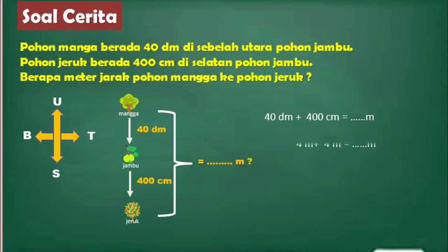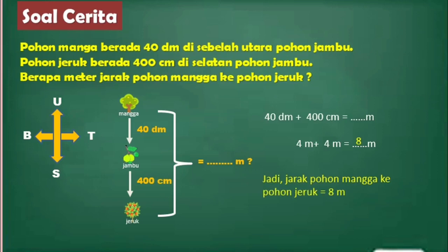Sama seperti soal-soal sebelumnya. Yang pertama, 40 desimeter diubah ke meter: naik satu tangga, berarti 40 desimeter nilainya sama dengan 4 meter. Yang kedua, 400 cm berapa meter? Dari cm ke meter naik dua tangga, berarti dibagi dengan 100. Hasilnya juga 4 meter. 4 meter ditambah 4 meter hasilnya adalah 8 meter. Jadi jarak pohon mangga ke pohon jeruk adalah 8 meter.